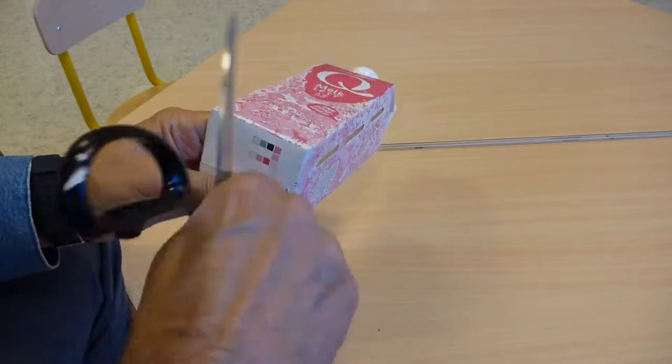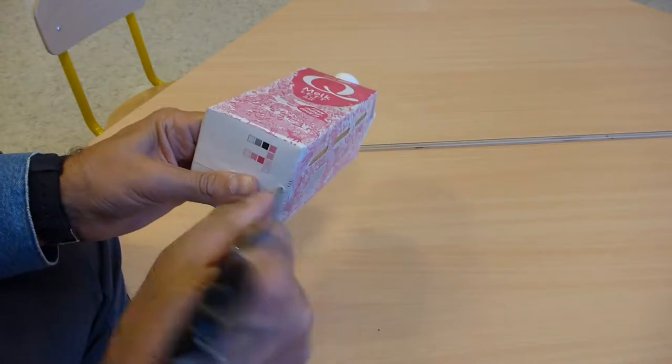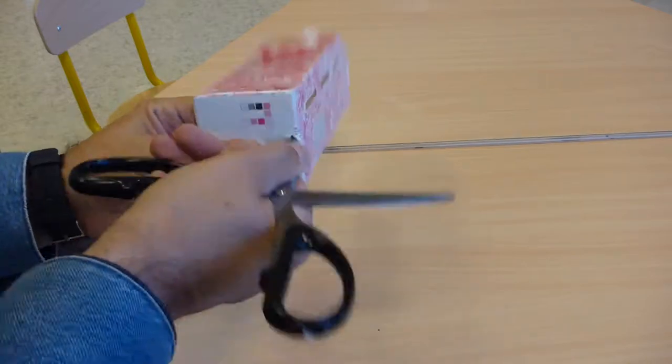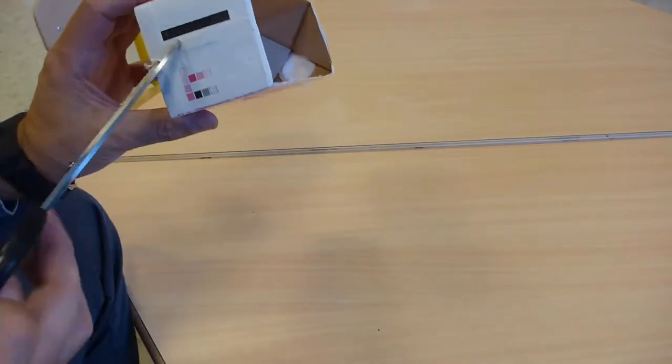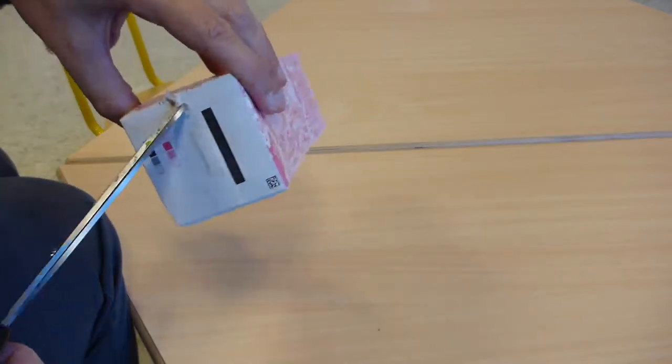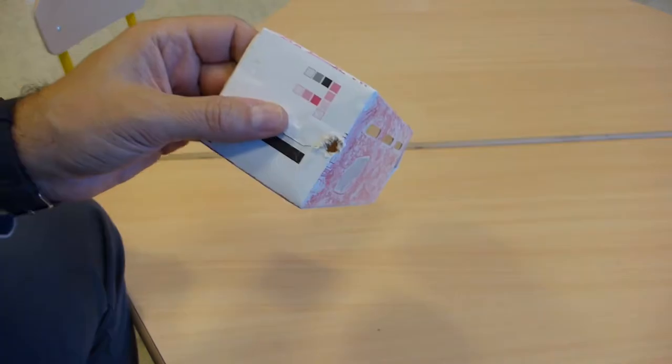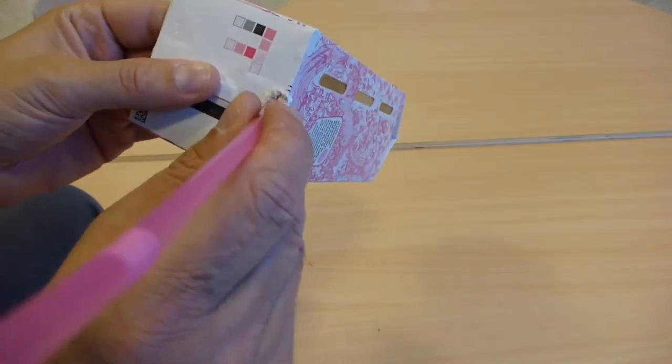Then you prick a hole in the bottom of the carton. This will be the rear of the boat and the hole shall be close to the bottom of the boat. The hole must be just big enough for the straw to pass through and still be tight.